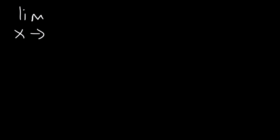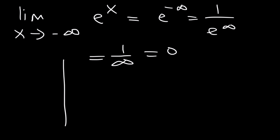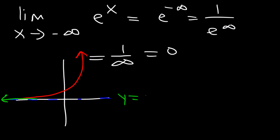Similarly, the limit as x approaches negative infinity for e to the positive x would be e to the negative infinity, which is basically 1 over infinity — that too is 0. If you were to graph e to the x, it looks like this. Notice that it has a horizontal asymptote of y equals 0. So as x approaches negative infinity — if we follow the curve all the way to the left — the y value becomes 0.